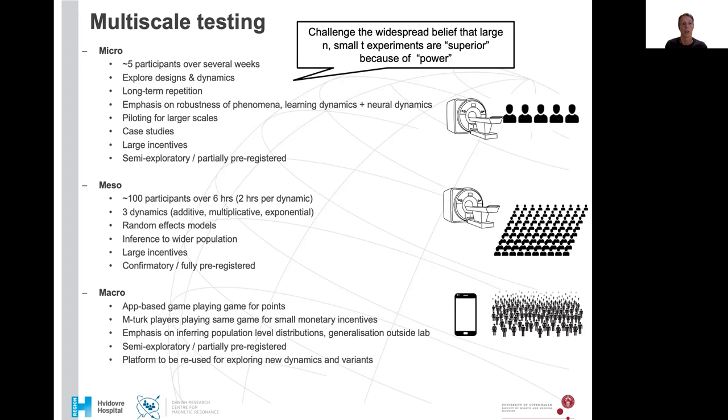At the macro scale, we would then like to develop an app based game where you can play the same experiment, but for points. We would also like to use Mechanical Turk players playing this game for some small monetary incentives. There we would really then put the emphasis on inferring population level distributions and generalize to outside the lab. This would be semi-exploratory, but also partially pre-registered. And it would be a platform that can be reused for exploring new dynamics and other variants and test whether small differences lead to changes in behavior.